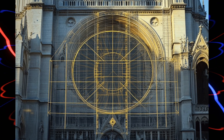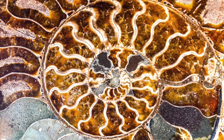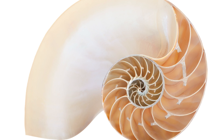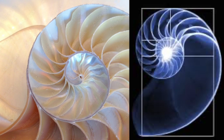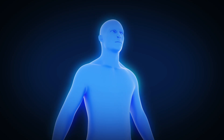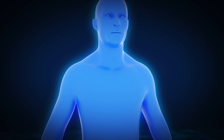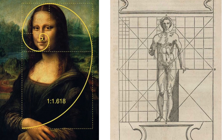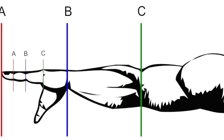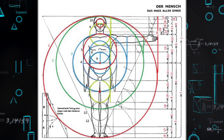Nautilus shells can sometimes be perfect examples of the golden ratio in nature. The golden ratio is also found in the human body — in the face, hands, arms, and fingers — and it even extends throughout our DNA.